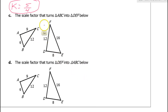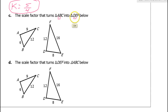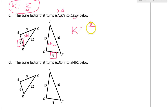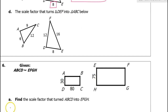For part C, AB corresponds to DE by the order of the letters. ABC is the old shape and DEF is the new shape. So the scale factor, new over old, is 8 over 6, which reduces to 4 over 3. Similarly, if DEF is the old and ABC is the new, then the scale factor would be 6 over 8, which is 3 over 4.